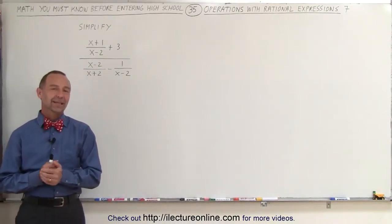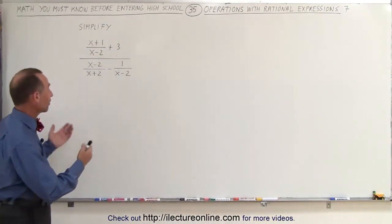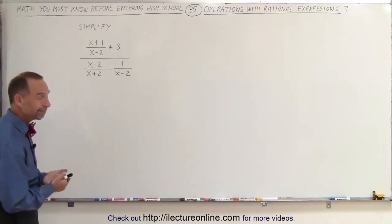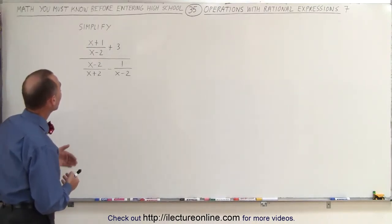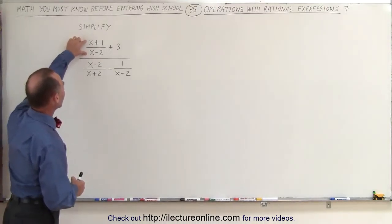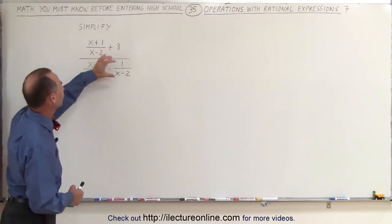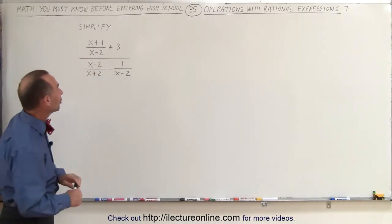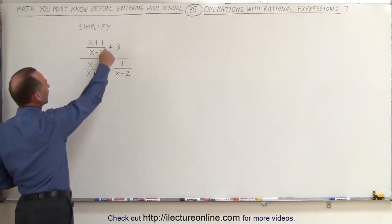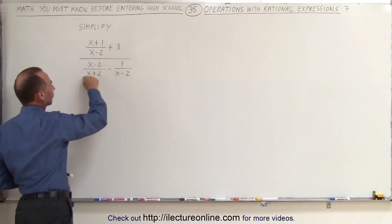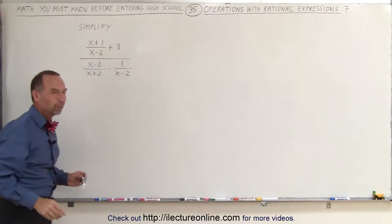Welcome to ElectronLine, and here's our next example of how to simplify a rational expression. This is quite a complicated one. We have a numerator that has a fraction in it, and a denominator that has two fractions in it. Notice all the denominators of each fraction: we have x minus 2, x plus 2, and x minus 2.